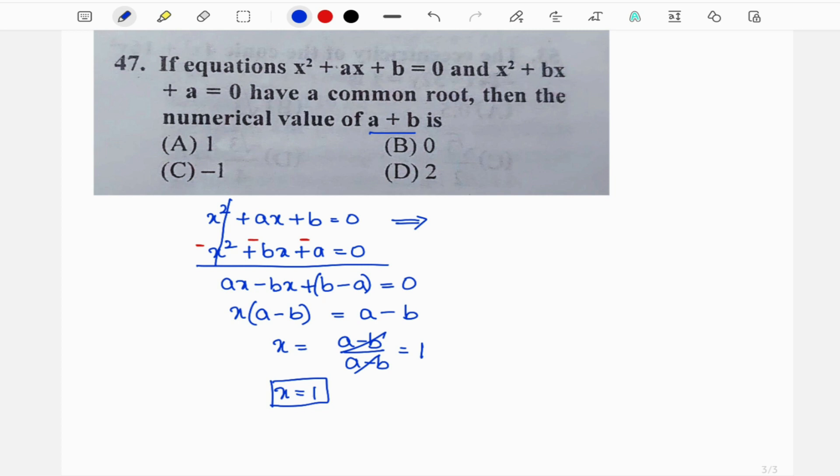In place of x I will substitute 1, so x² is 1² + a × 1 + b = 0. So 1² is 1 plus you have a plus b = 0. Now 1 goes to the right hand side, you will get -1. So what is the numerical value of a plus b? It is option C, minus 1.